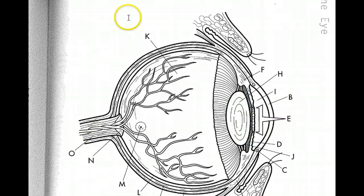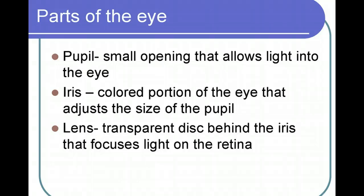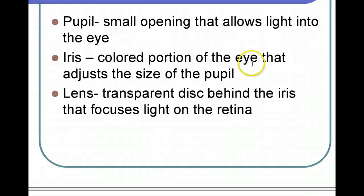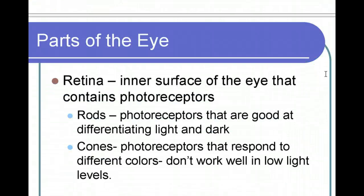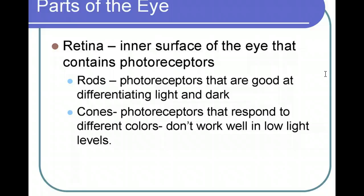Going back to our slides, let's learn some more parts of the eye. The next part of the eye is the retina. The retina is the inner surface of the eye that contains the photoreceptors. We have two different types of photoreceptors in our eyes: rods and cones.